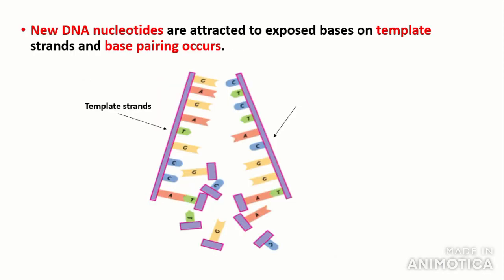Next, new DNA nucleotides that have been synthesized through biochemical pathways are attracted to their exposed bases because of specific base pairing, and they base pair with their complementary base. The template strands are indicated by arrows, and the newly synthesized DNA nucleotides pair with them. It's important to emphasize that these are DNA nucleotides — don't confuse this with transcription, where it would be RNA nucleotides.